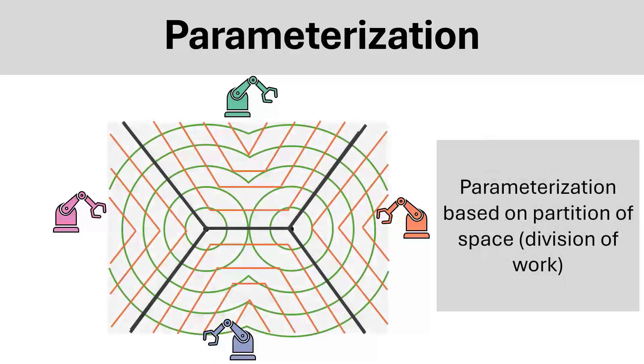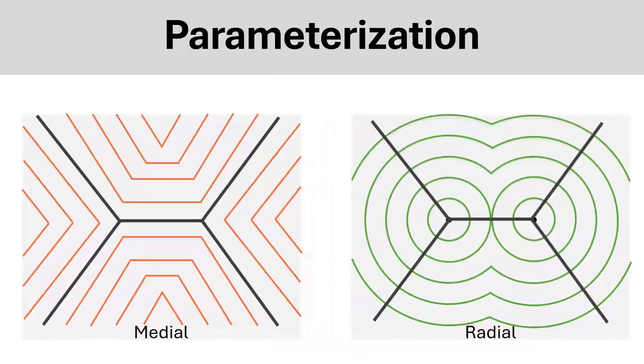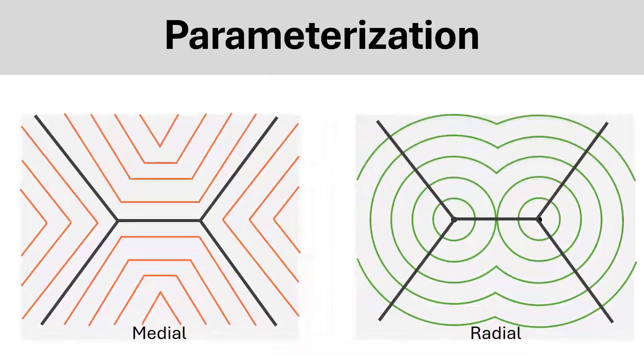This allows for a parameterization based on the partition of space, which we call medial and radial, where medial is equal distance to the edges of the partition, where radial is equal distance to the branching points of the partition. These two provide the basis for how we can sequence printing of a part.